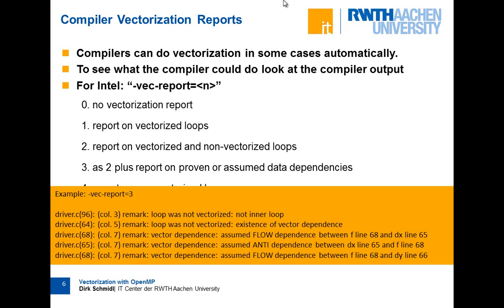Here is an example: with vec-report equals 3 on example code, it might say a loop was not vectorized because it's not an inner loop — it tries to vectorize the innermost loop normally. Or it says there exist vector dependencies — it assumed a flow dependency between variables f and dx, and you can check whether those dependencies are real. If it says 'assumed', it might be a dependency only if pointers overlap, which is hard for the compiler to determine from pointers in C.